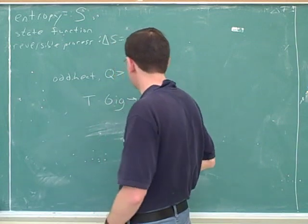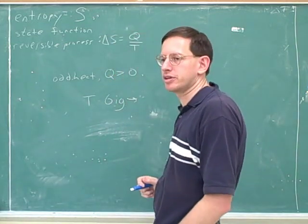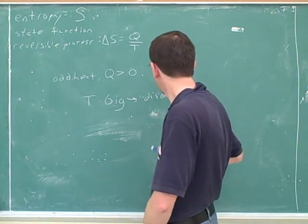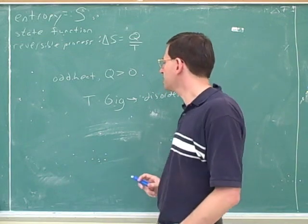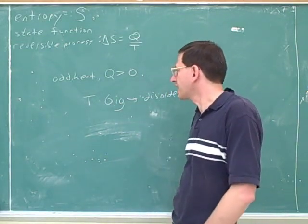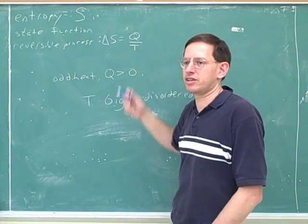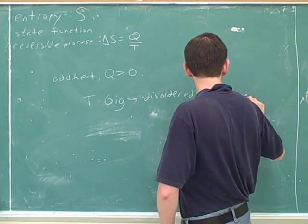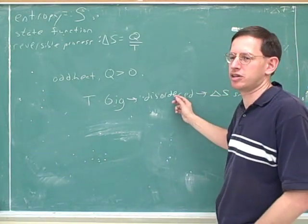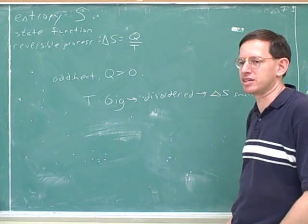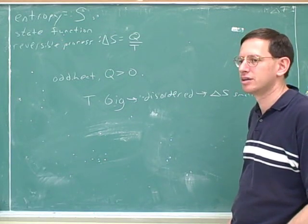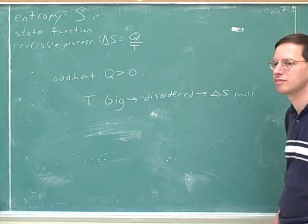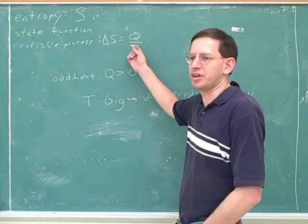Now, if the T is big, what were you saying? Does that mean that something is going to be ordered or disordered? Disordered. Because again, the particles are moving around very quickly. So the general idea here is if T is already very big, adding a little bit more heat doesn't make much difference. Because there's already so much disorder. So if T is very big, the change in entropy is going to be relatively small. Because there's already so much disorder that a little bit more heat doesn't make much difference. That's a rough way of seeing why T should be in the denominator here.